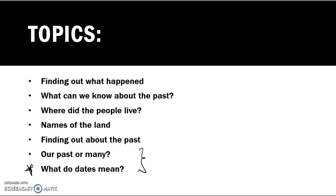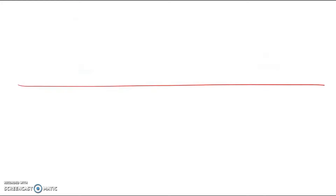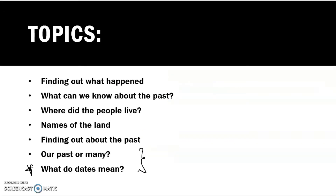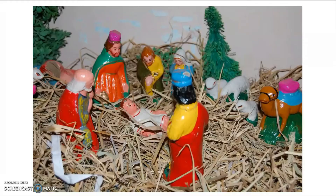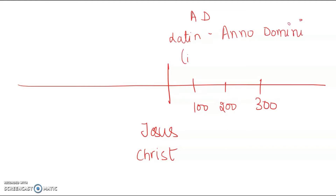Now we are going to talk about what do dates mean. You might get confused when you read BCE, AD, or when you come across CE. But I'll make sure I clear all your problems. Now consider this to be a timeline, and here I've got the birth of Jesus Christ, the founder of Christianity. The years that lie ahead of the birth of Jesus Christ are referred to as AD — that is a Latin word which means Anno Domini, which means 'in the year of the Lord.'